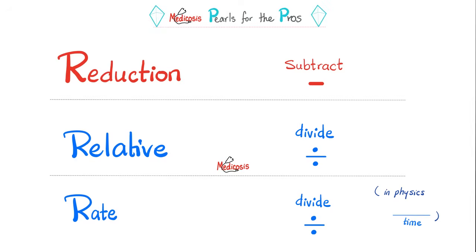Many students confuse these concepts, but if you actually understand the words, you will get it right. When I say reduction, it implies subtraction — so absolute risk reduction means you subtract something from something else. But when I say relative, as in relative risk reduction or relative risk, then we are dividing — something relative to something, with a numerator and a denominator. And when I say rate, it also implies division, with a numerator and a denominator.